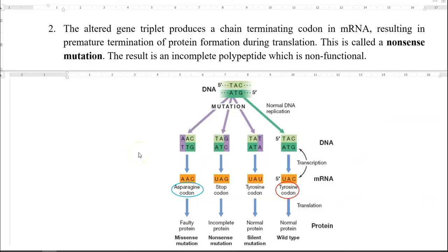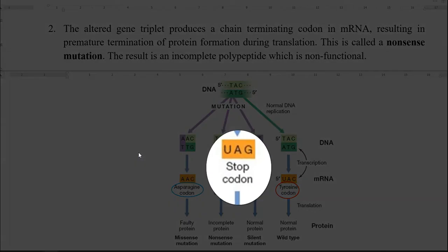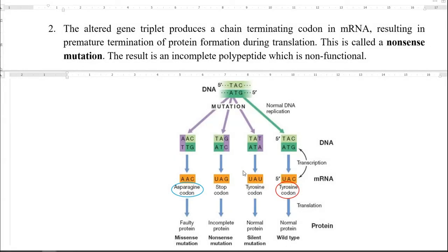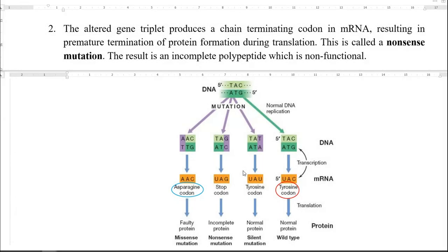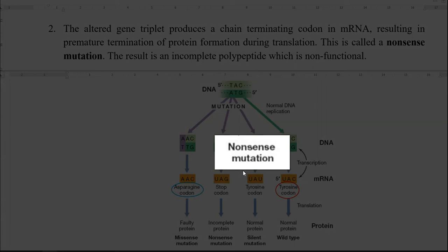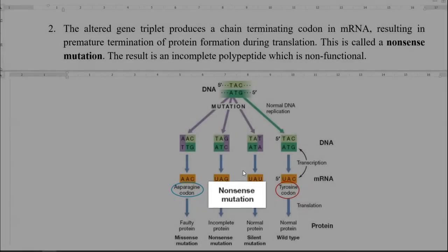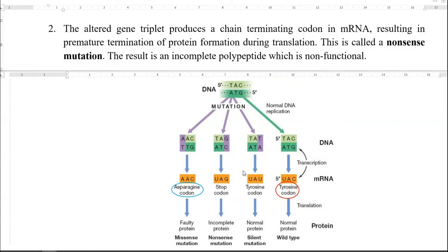In the case of nonsense mutation, the altered gene triplet produces a chain-terminating codon in the mRNA, resulting in premature termination of protein formation during translation. Instead of a protein-coding sequence, it has been changed into a stop codon. As a result, it produces an incomplete protein. The polypeptide produced is incomplete or non-functional in nature.